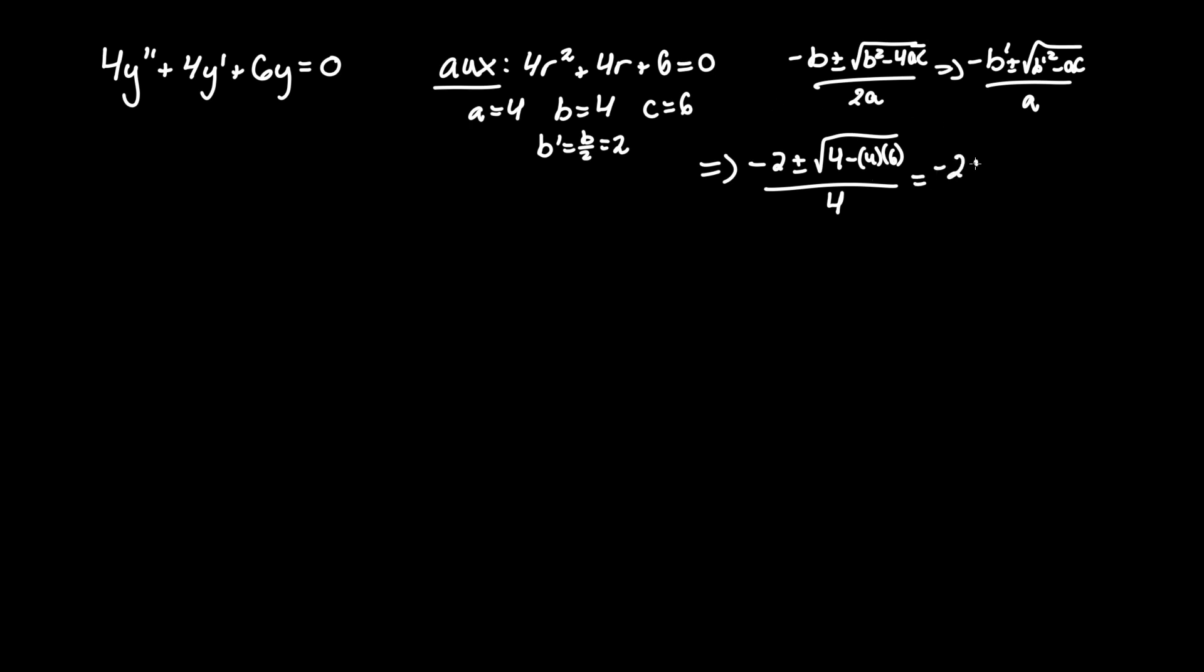And this equals -2 ± √(4 - 24) = -2 ± √(-20). And we keep that 4 there.